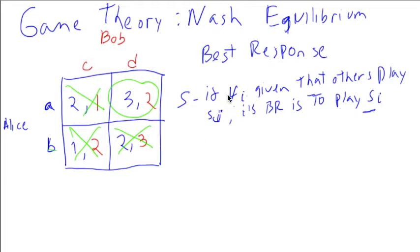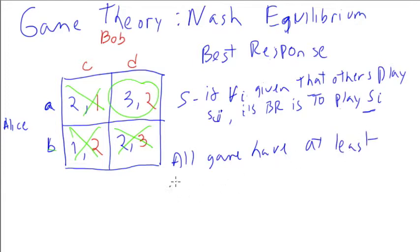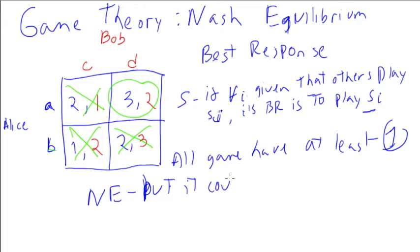What Nash proved is that all games have at least one Nash equilibrium, but it could be mixed. Remember pure versus mixed strategies — it could be that there is no pure Nash equilibrium and only a mixed Nash equilibrium exists, in which case you have to work with probabilities.